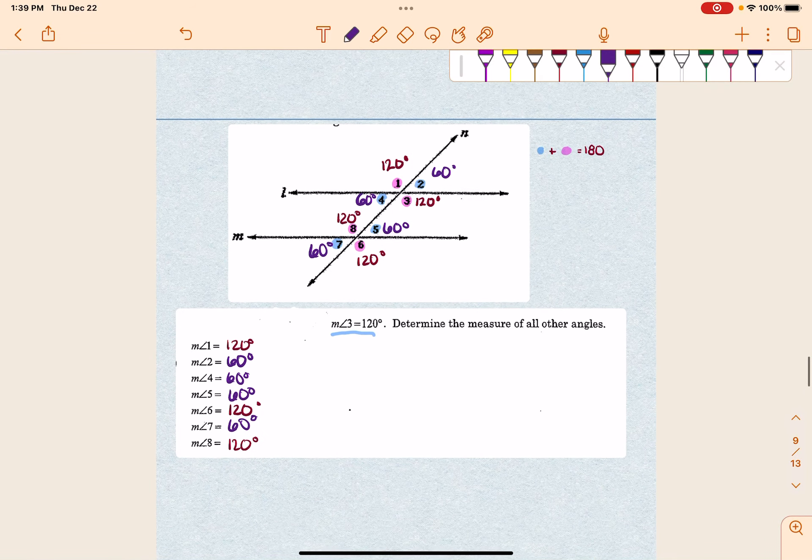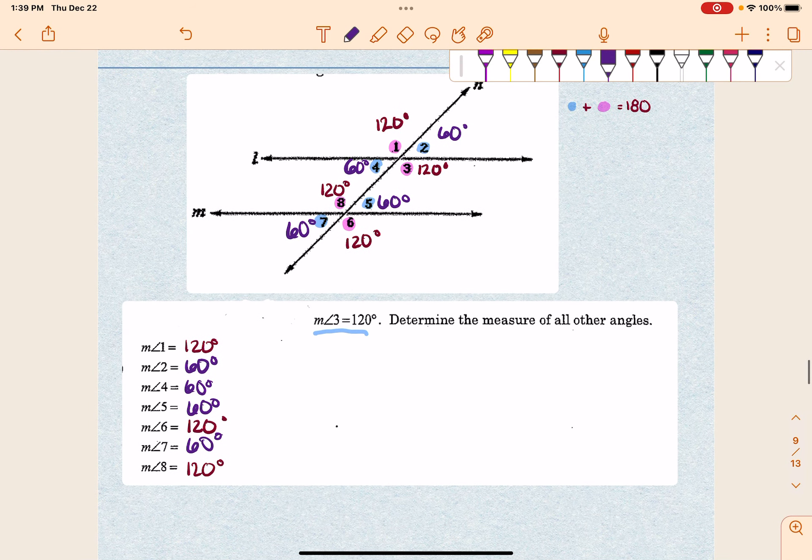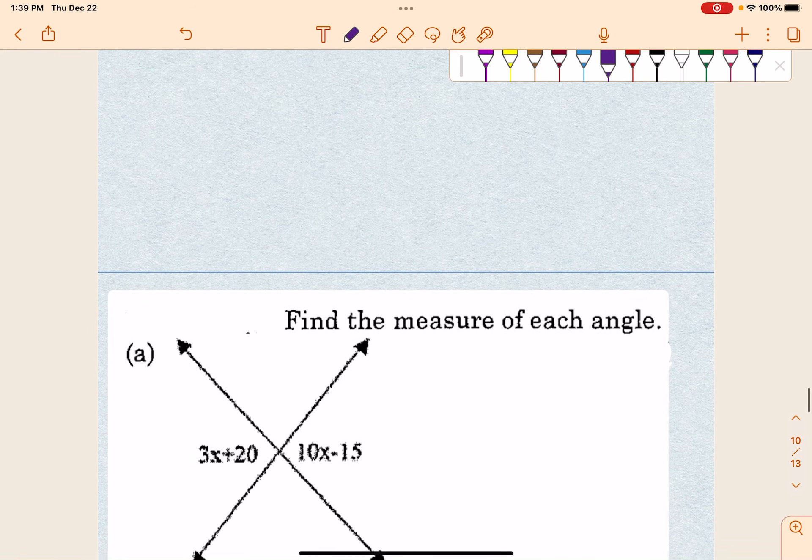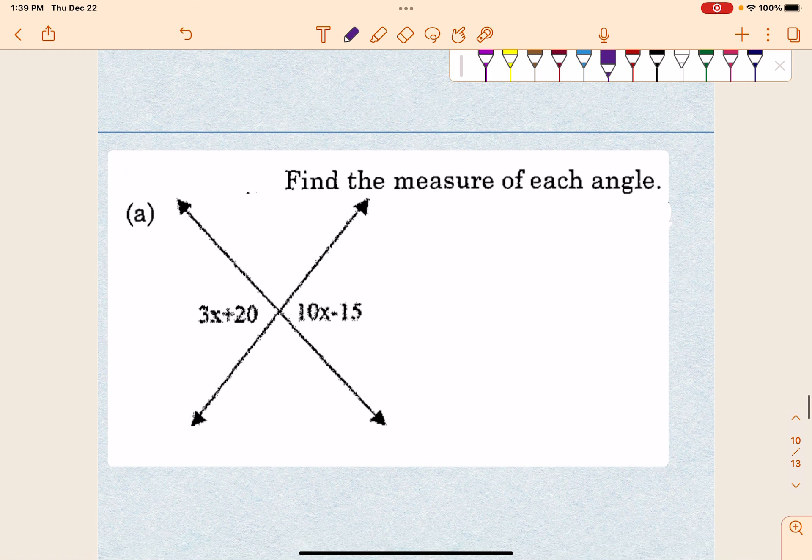So again, if you know one of the angles, then you can go through and find the other ones. Okay, let's take this a little bit farther and add some algebra into it. So let's say that I have something like this and it says find the measure of each angle.